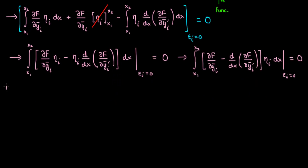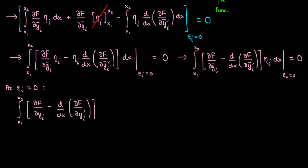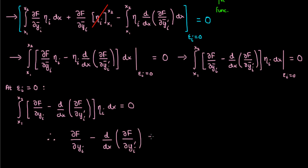When epsilon_i is zero, yi bar is just equal to yi by the definition of yi bar, and we end up with a simplified expression for dI/d(epsilon_i). Now if eta_i is an arbitrary function, the only way this integral is guaranteed to be zero is if partial F / partial yi minus the derivative with respect to x of partial F / partial yi prime equals zero.